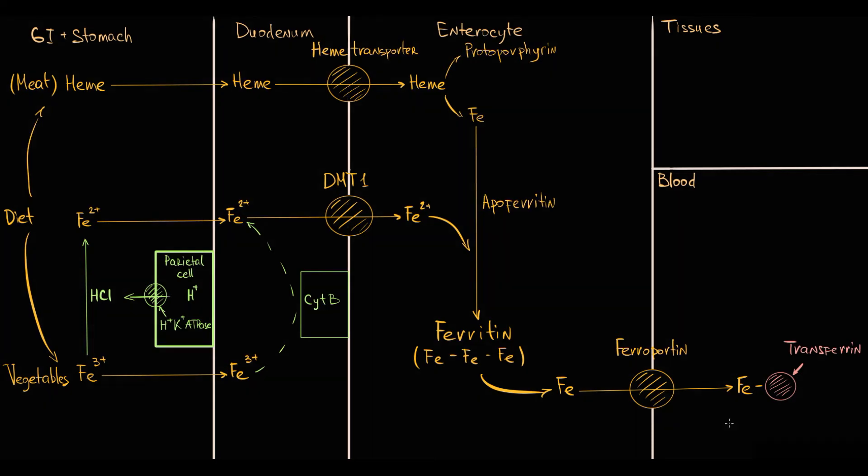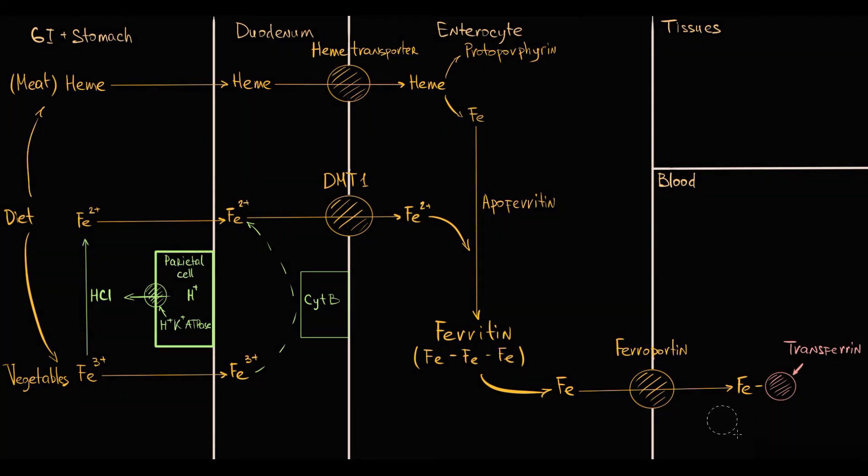Generally, in the blood we have one iron molecule for three transferrin molecules. And transferrin delivers iron to peripheral tissues where transferrin binds to transferrin receptor and transfers iron into the cell. Inside the cell, iron binds to apoferritin with formation of ferritin, and ferritin is the major storage form of iron in our body.